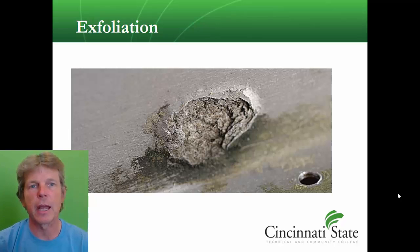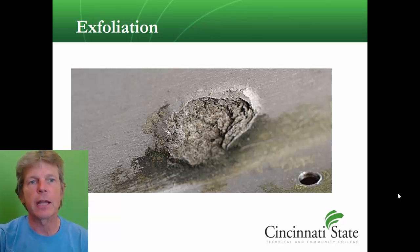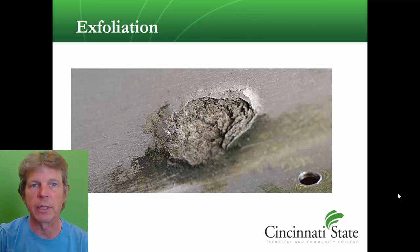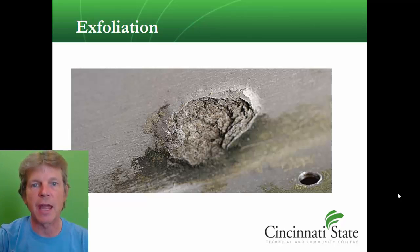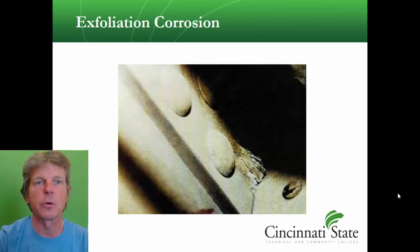Here's exfoliation. Exfoliation is a form of intergranular corrosion — you can see here, this is what happens when intergranular corrosion gets really, really bad. There's no saving exfoliation. This stuff is dead on arrival. If you see a part with exfoliation, it's toast.